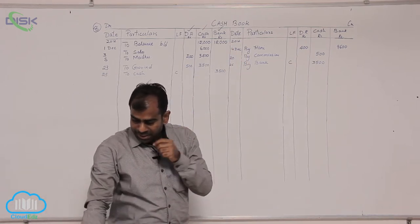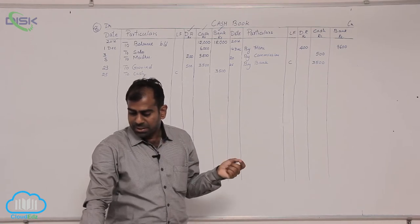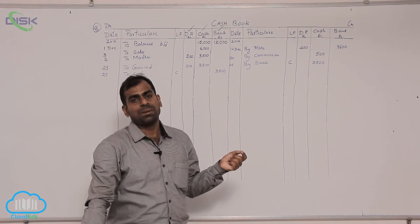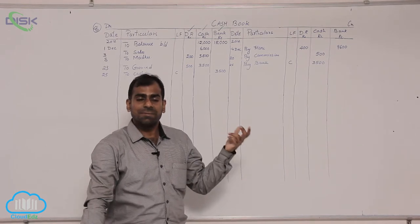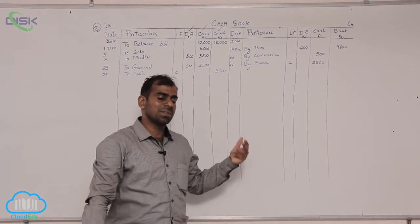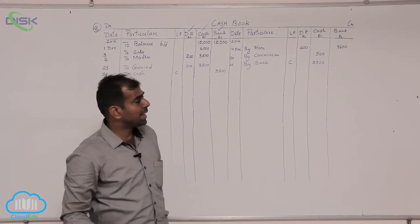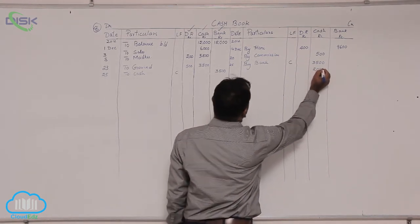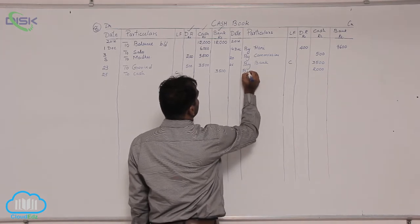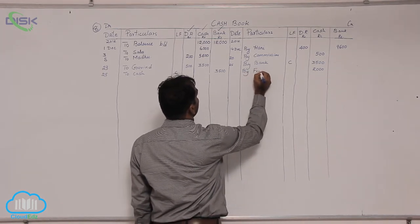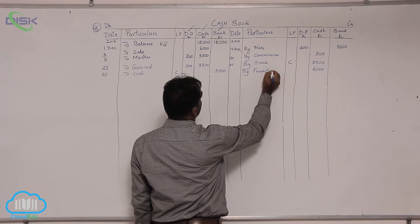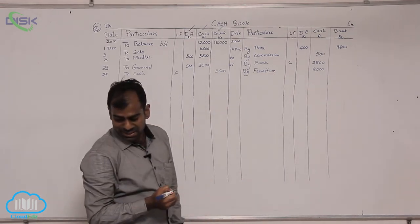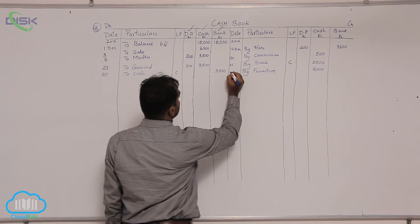The next transaction is on 26th: it was bought furniture. Purchase of furniture is a payment, so go to the credit side, enter the amount in the cash column — 2000 — and 'by' is constant. The reason is you are buying furniture, so write 'furniture' in the particulars column, and the date being 26th.